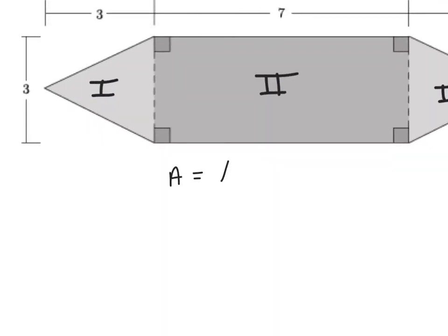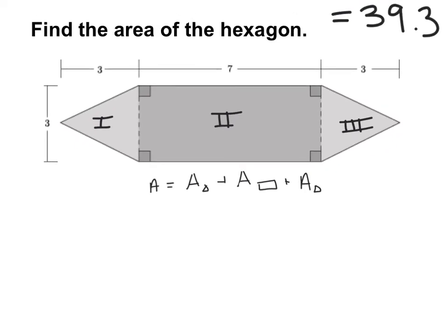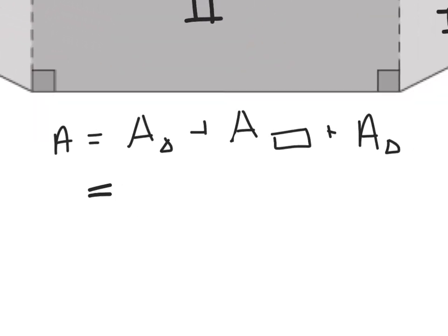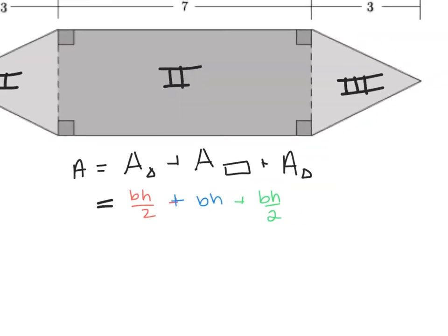Area equals area of a triangle plus area of a rectangle plus the area of another triangle. Now we need to break it apart. Let's just write down our formulas. We know the area of a triangle is base times height over 2. We know the area of a rectangle is base times height. So we go back to our image and we find our information.